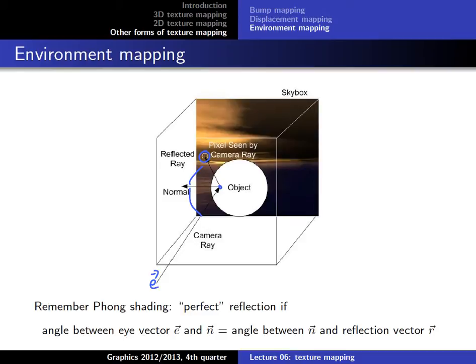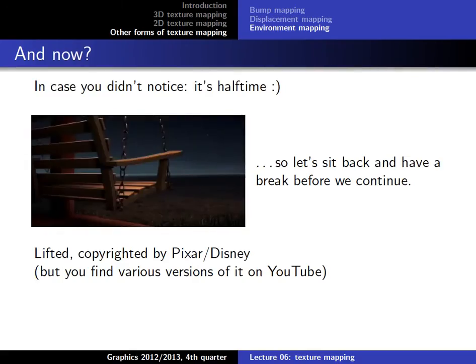Those last three — bump mapping, displacement mapping, and environment mapping — I gave you a rough idea. That should illustrate the concepts. In the practicals you also have examples of different kinds of texturing usage, including using normal maps and not just images for texturing. Are there any questions about texturing?